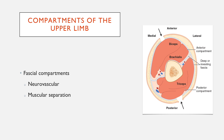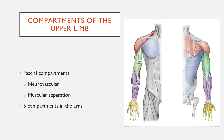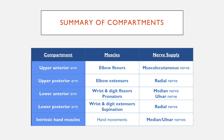Knowing the fascial compartments well will allow you to understand what muscles are in each compartment and what those muscles do. The upper limb — the arm — has five compartments: two in the upper arm, two in the forearm, and one in the hand.